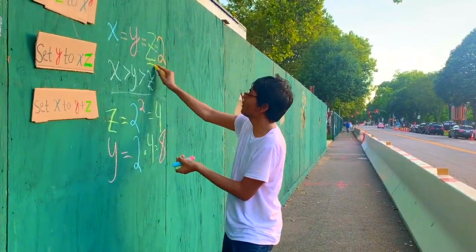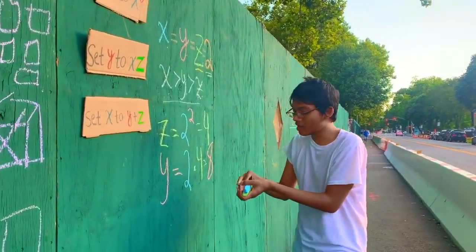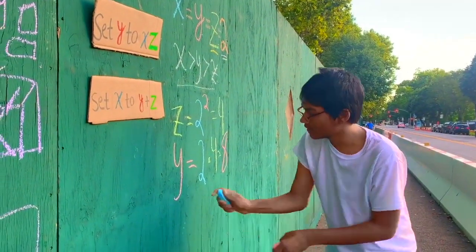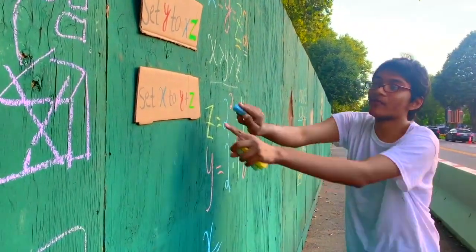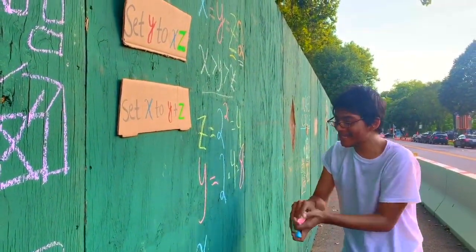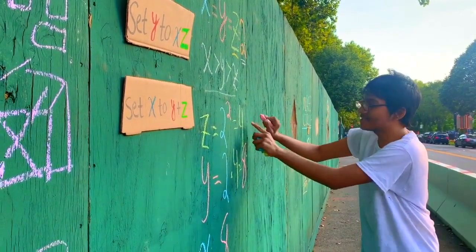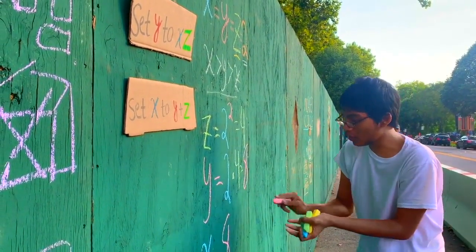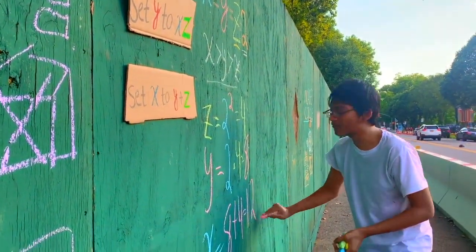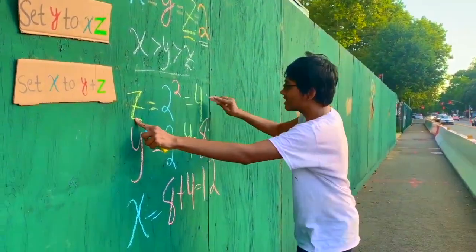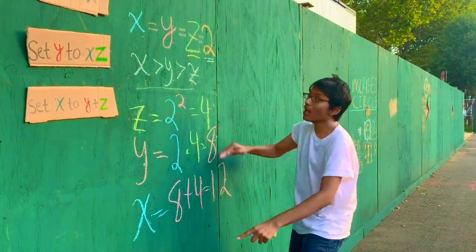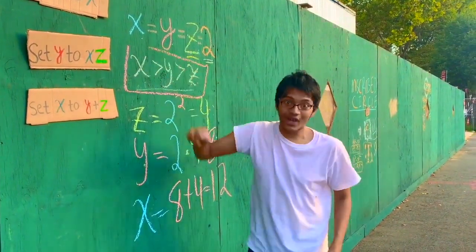Finally, for our x value, we're going to have y plus z. y is 8, and z is 4. So 8 plus 4 is going to give us 12. So the answer is: z equals 4, y equals 8, x equals 12. And is our inequality satisfied? As a matter of fact, it is.